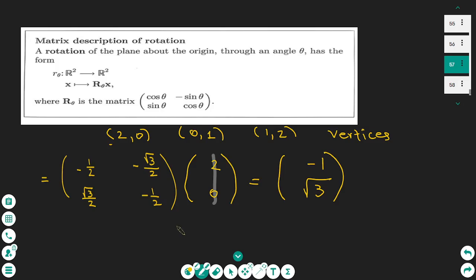We multiply all of the vertices in the same way. For the vertex (0,1), we get -√3/2 and -1/2.